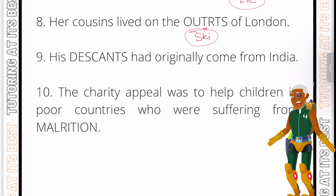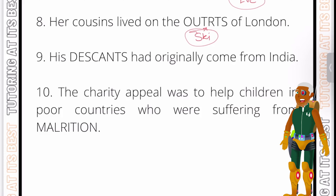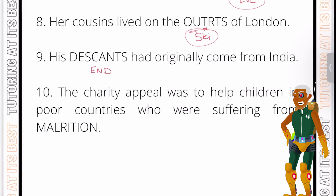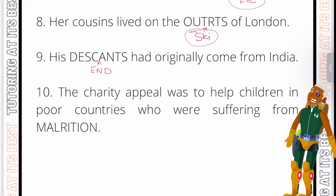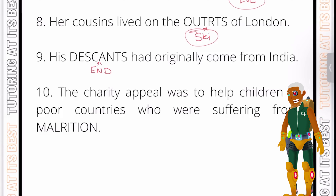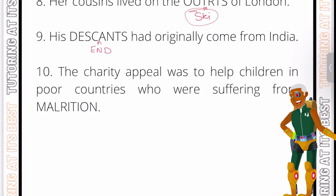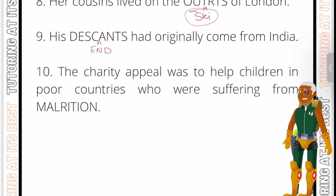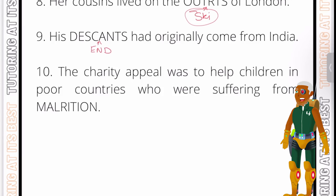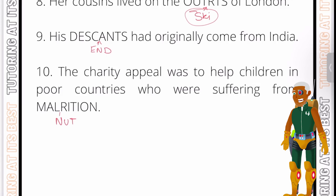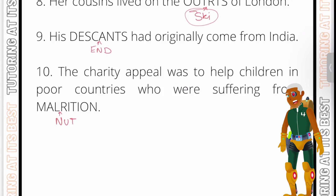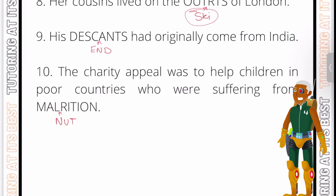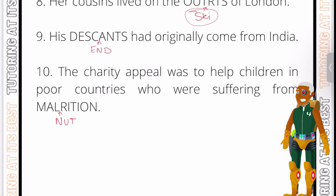Question nine reminds us of the word 'descendants'. We add in E-N-D just after the first C to complete it. Finally, question ten: 'The charity appeal was to help children in poor countries who were suffering from MAL_RITION.' This should click as 'malnutrition' — we put N-U-T just after the first L. Malnutrition occurs when someone's diet is lacking the nutrients they need to be healthy.